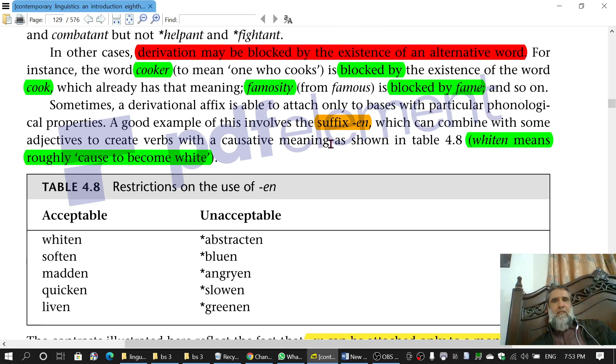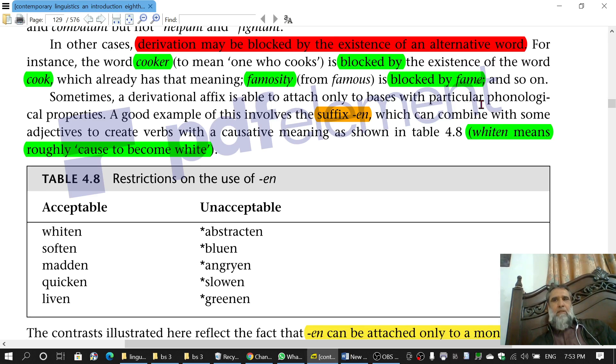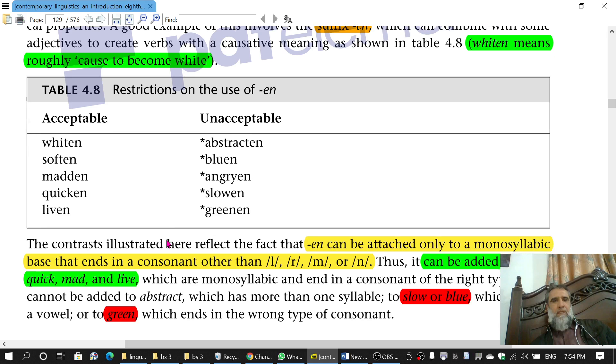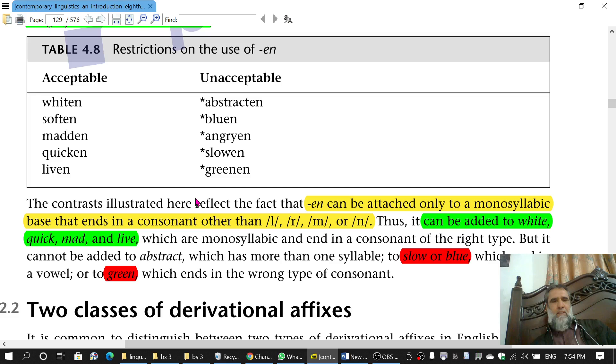This suffix -en which we have is not used with all words, but some phonological properties are required. For example, the phonological property is that it should be monosyllabic, and the end should be consonant, not vowel. These qualities are not in all words, so they will not allow derivation.